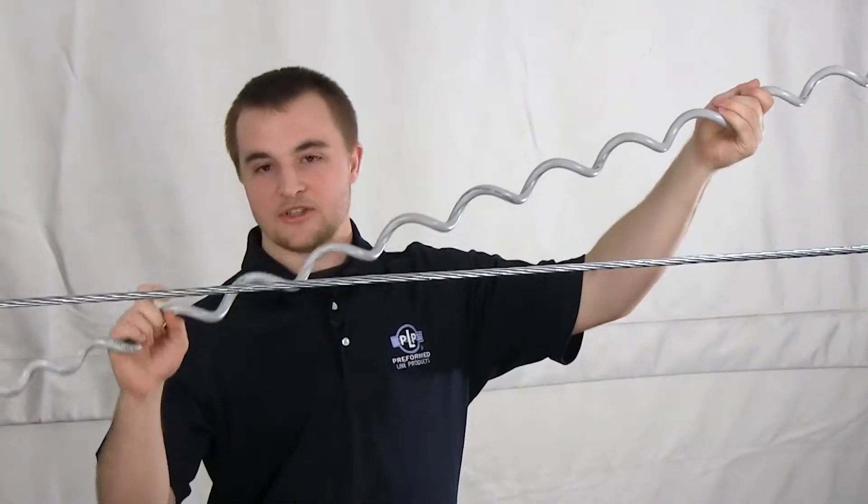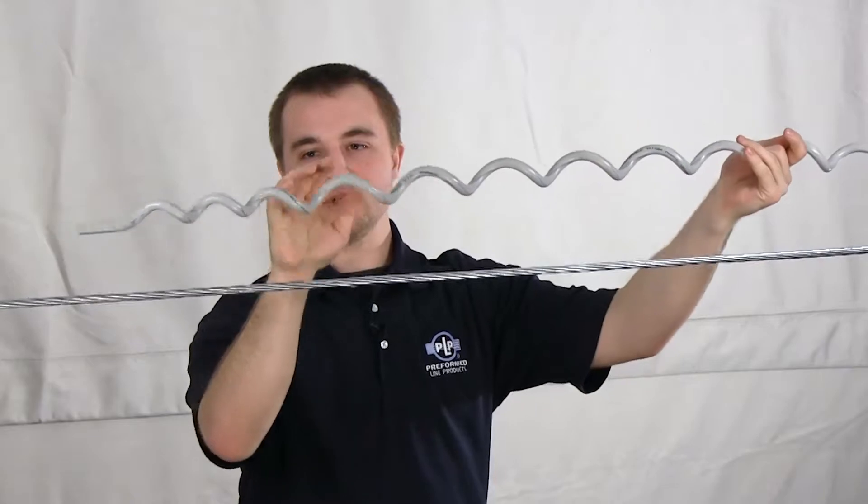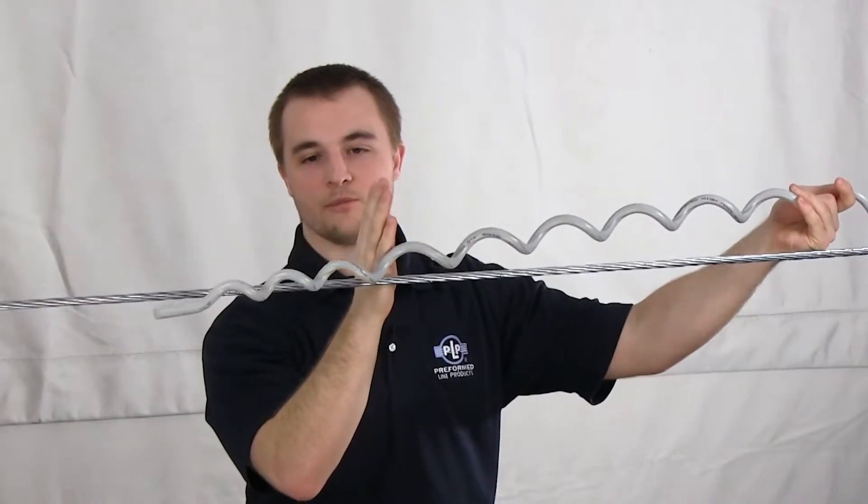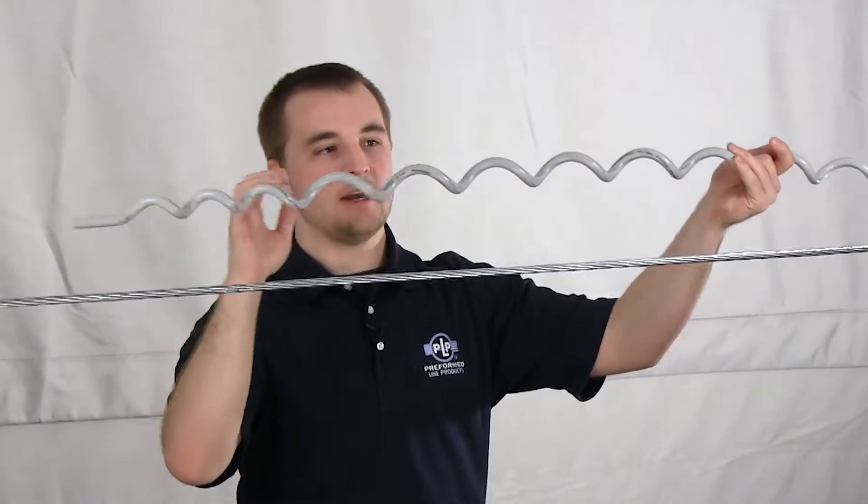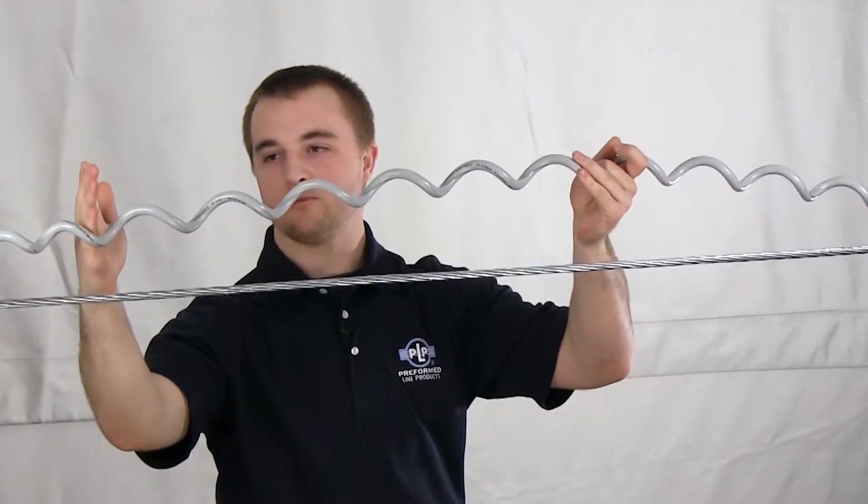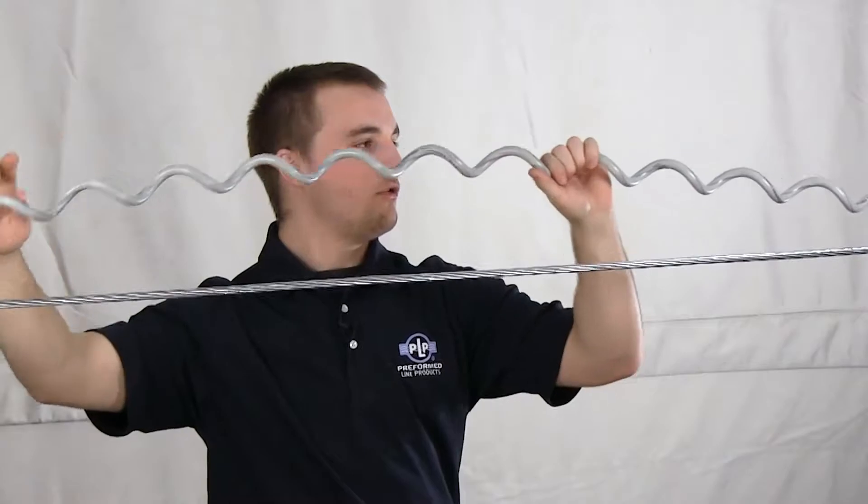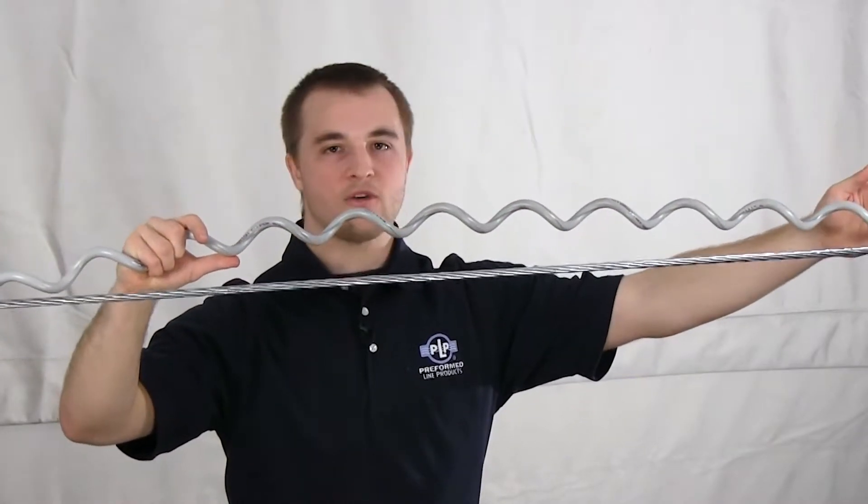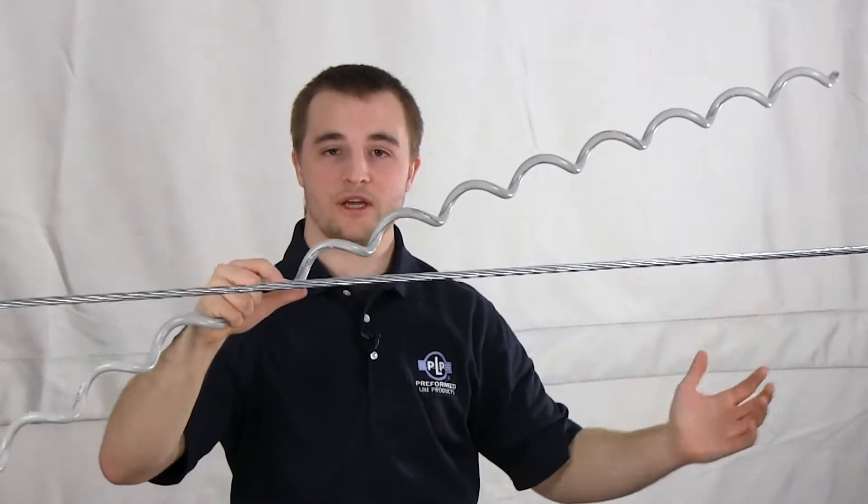An SVD has a short gripping section which can be seen from here to here, and it has a very long damping section which goes from here all the way to the end of the spiral vibration damper, about five feet in length.